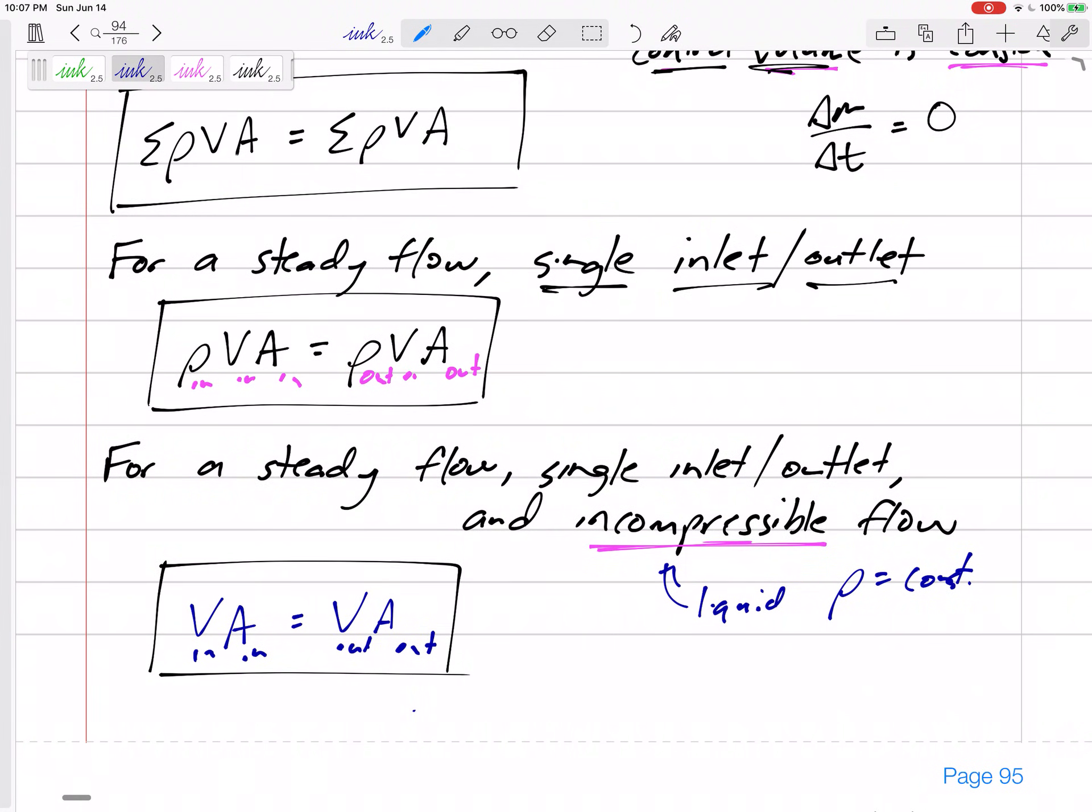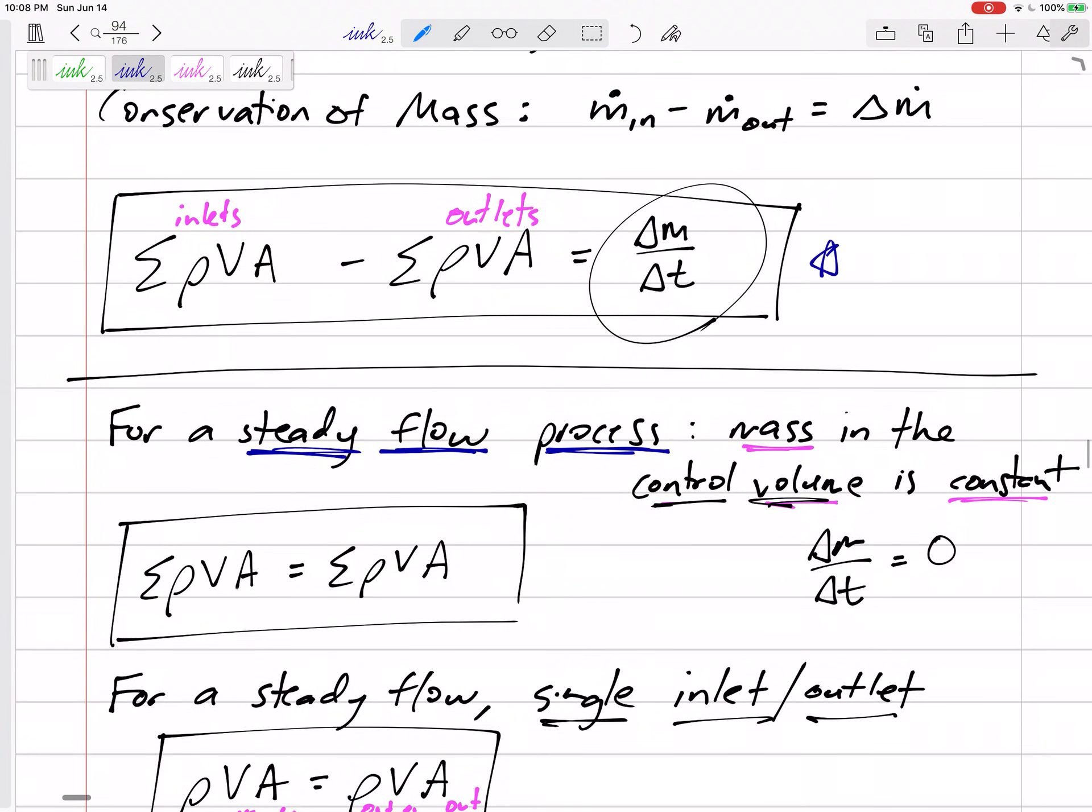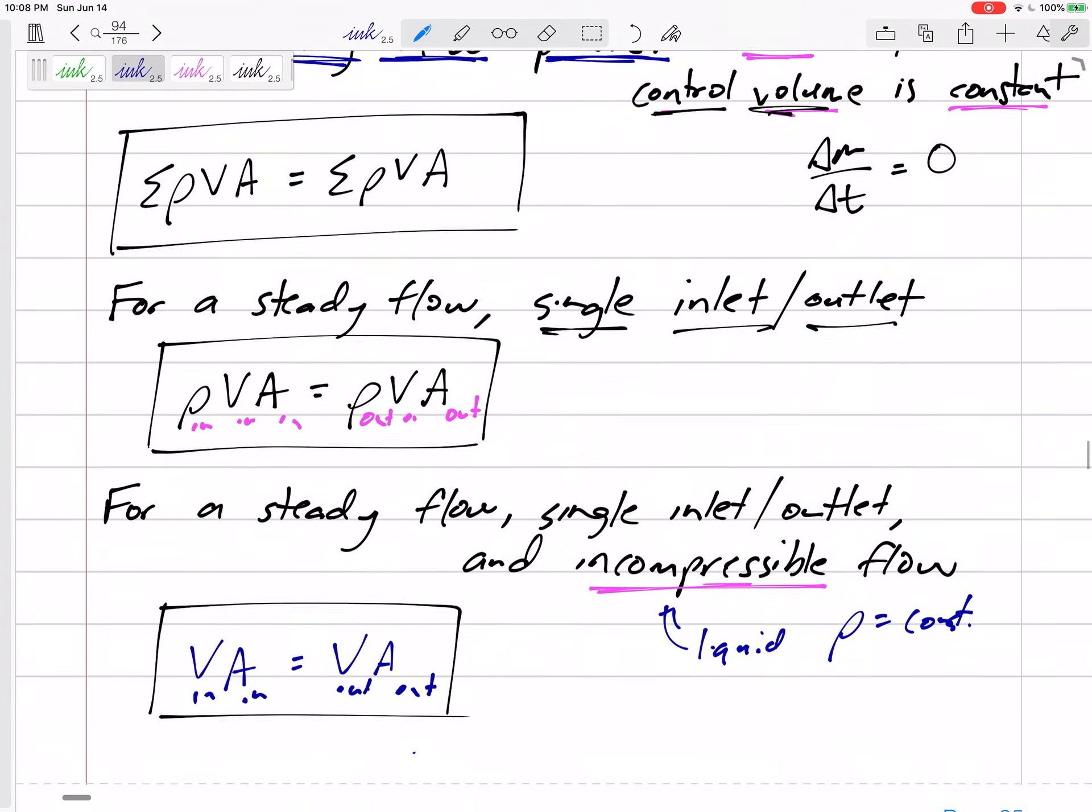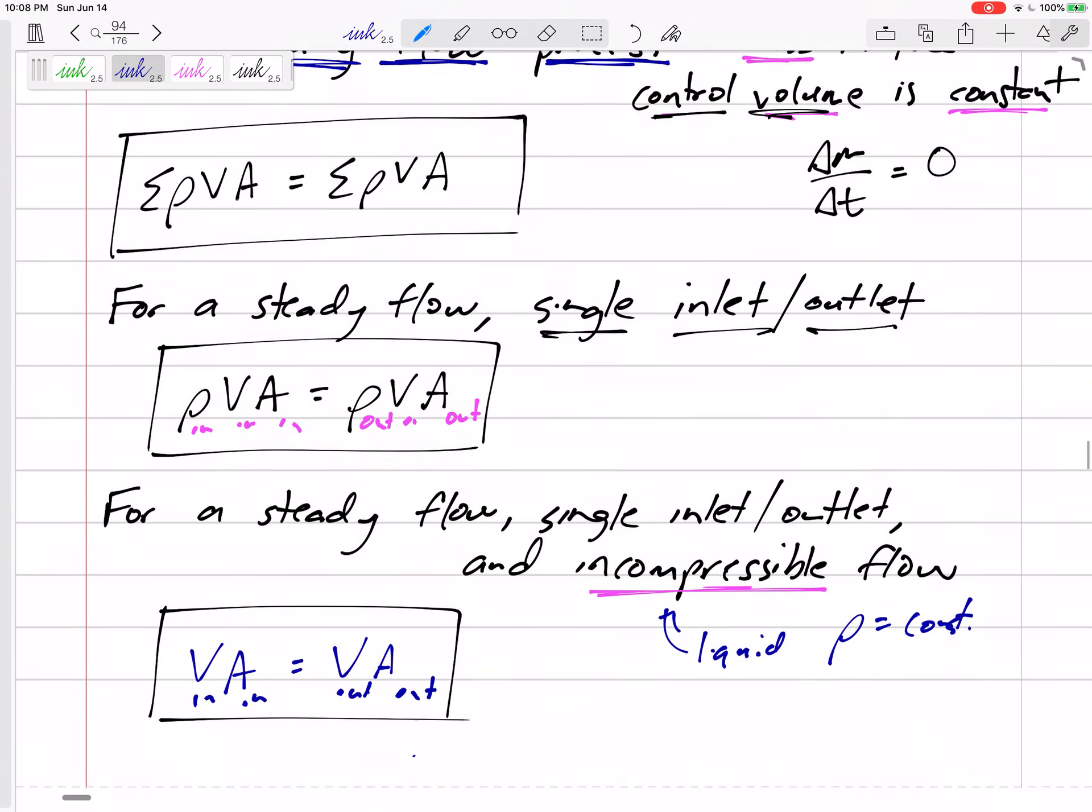You could put those on your formula sheet. You can memorize those or you could just start right here every time. And then, oh, it's steady flow. This goes to zero. It's got the same rho going in and rho going out. There's only one. So there's no summation. So you see how we could simplify it. We could write lots of different equations. Or we can kind of start up here at our main one and simplify it as much as we can.